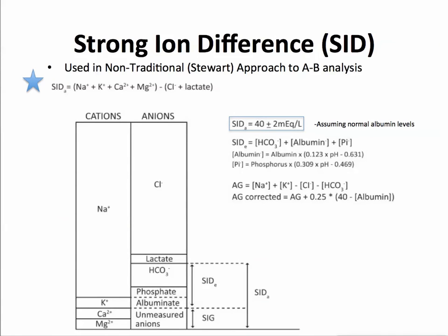Strong ion difference refers to a non-traditional approach to interpreting arterial blood gases in which you look at the difference between the cations and major anions in the blood. There has to be electrical neutrality, so the difference between cations and anions should be zero if you can measure all of them. The major cations in the blood — sodium, potassium, calcium, and magnesium — are all measured, as shown at the top of the diagram.